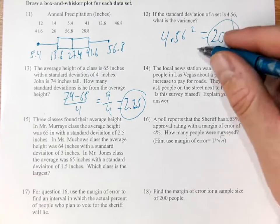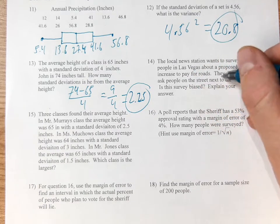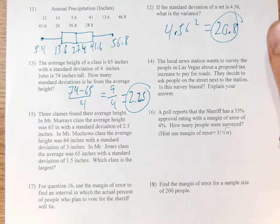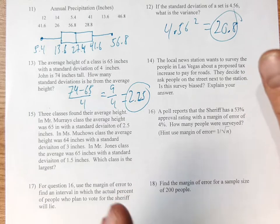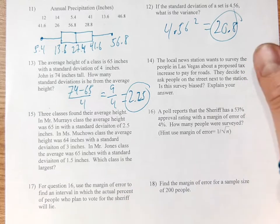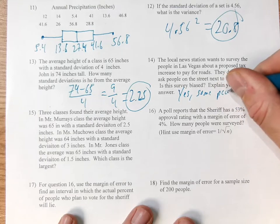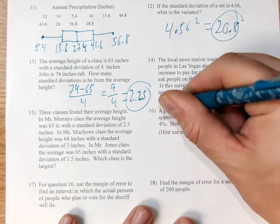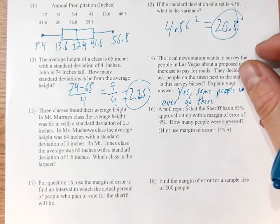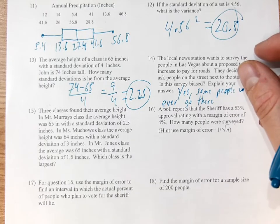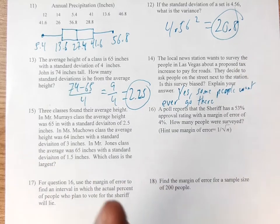So here we have a local news station. They're going to survey the people of Las Vegas about a proposed tax increase to pay for roads. They decide to ask people on the street next to their station. Is this survey biased? The question would be, does everybody go to the street next to their station, or are there people that don't go there? The obvious answer is there's people that don't go to that street. So there is some bias here because some people won't ever go there. They're going to survey the people in the neighborhood next to their station, not the people in the whole city of Las Vegas.